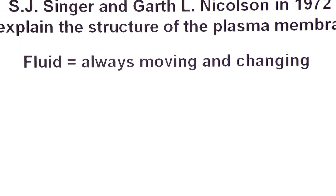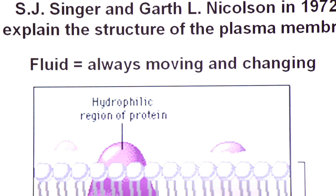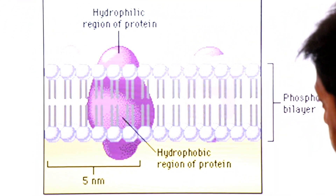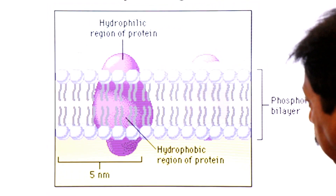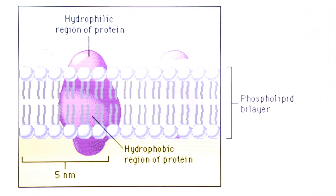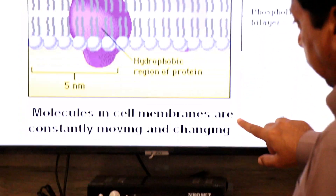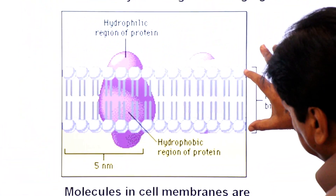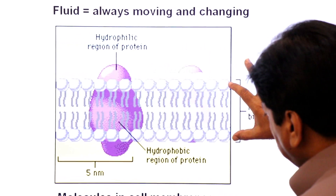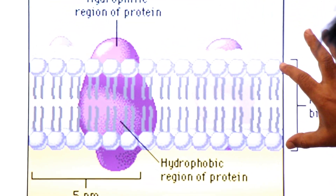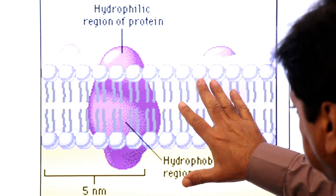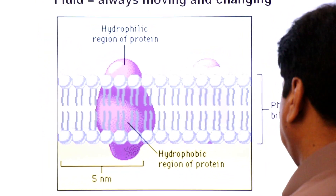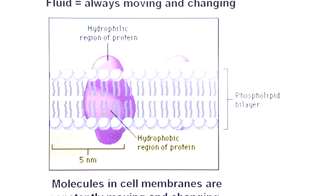As you can see in the animation, some molecules are changing their position and some molecules are in constant motion. The phospholipid bilayer is called the fluid portion, and the protein pieces that float within it form the mosaic part.